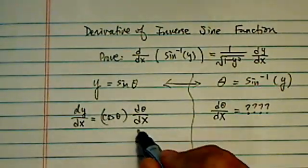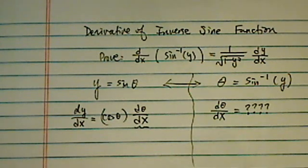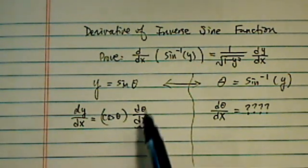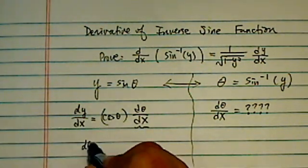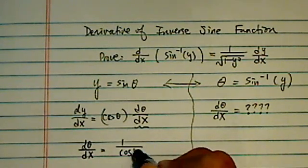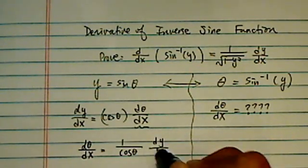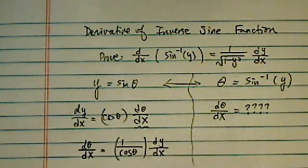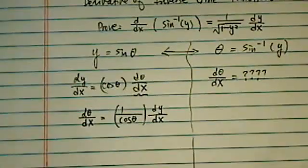Nothing tricky over there. d theta dx is the gold nugget we're looking for. So, of course, we're going to divide everything over. We have d theta dx is equal to 1 over cosine x dy dx. Nothing fancy there. No tricks there.